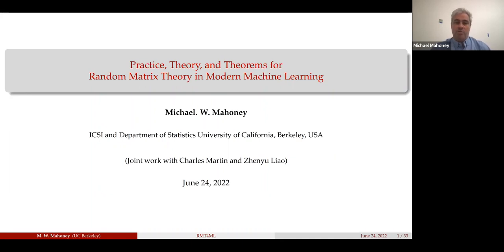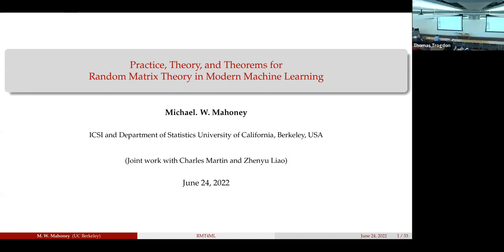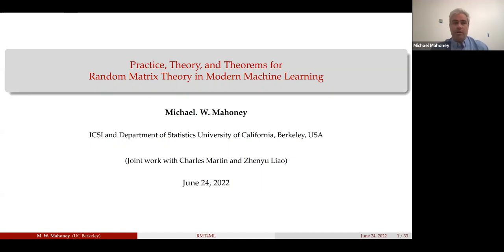I want to talk about work teasing out key structural components to have a framework for theorems. One of the key things you see in state-of-the-art machine learning models is that matrix concentration results or Johnson-Lindenstrauss type results - a lot of theory goes through those - may be less directly relevant. The informal reason is: if you have a dataset of some size and you train some model, ask yourself what you would do if your dataset were a factor of 10 or 100 larger. You'd make the model bigger.